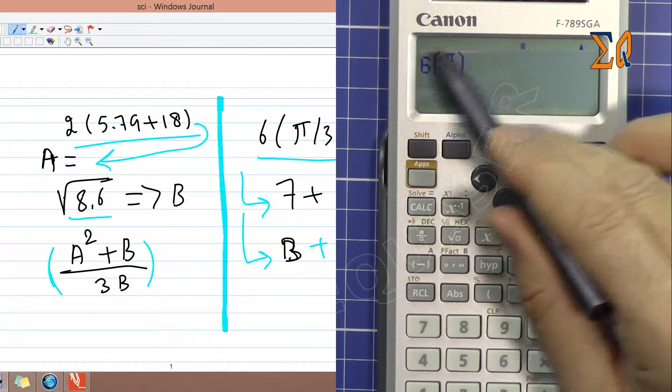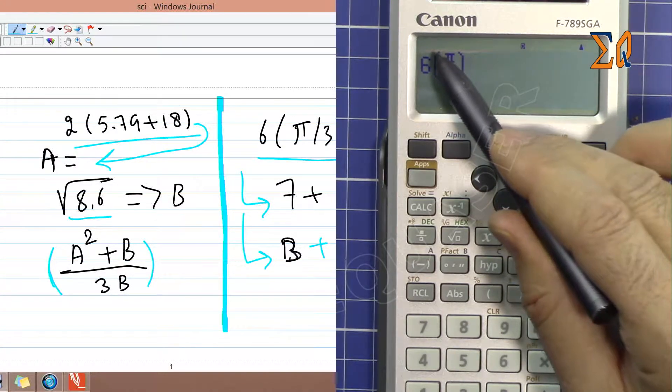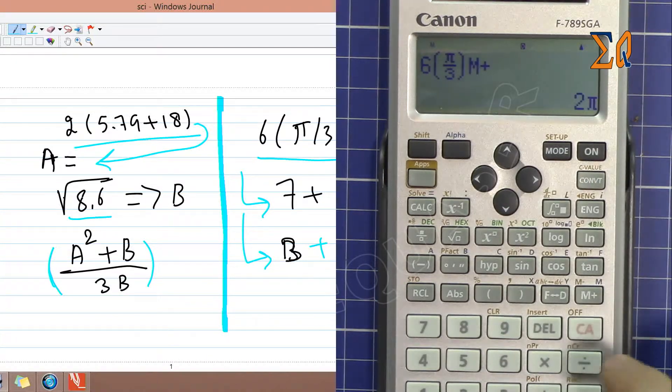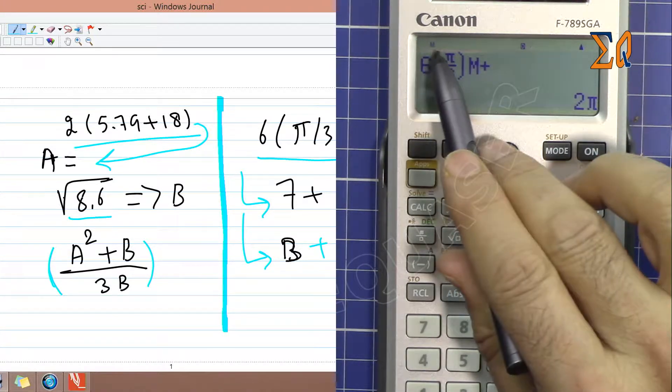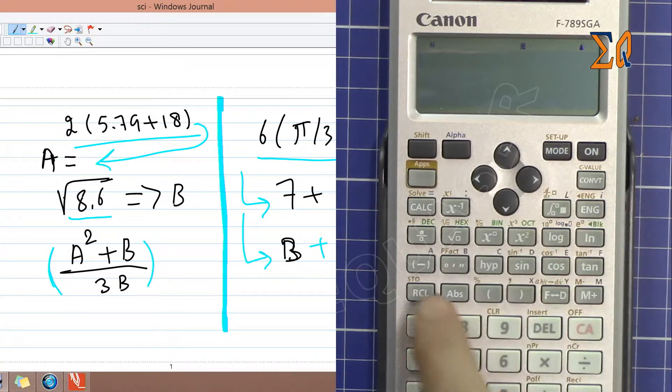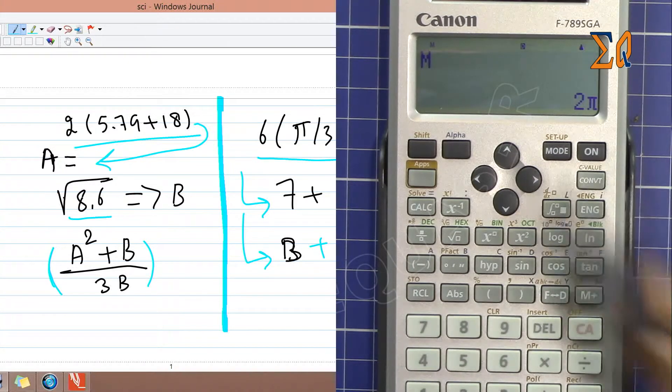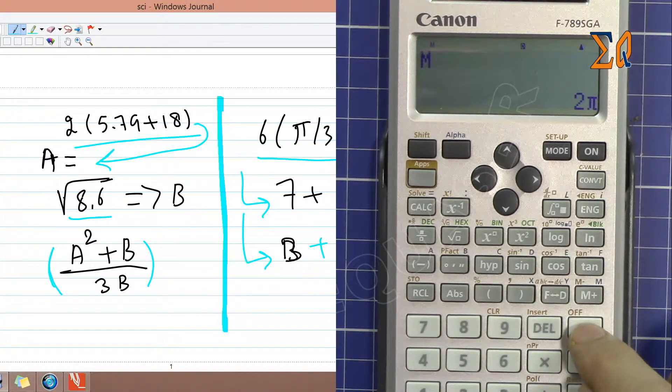So I'm pressing this. Now this value went into M and plus and the M is here. Now clear all. If you want to recall it, just press recall M as usual. You see the value is 2 pi.